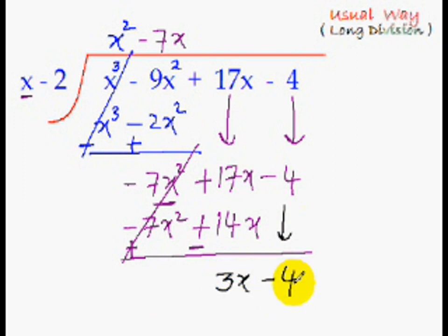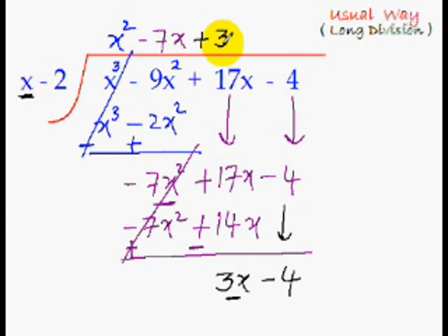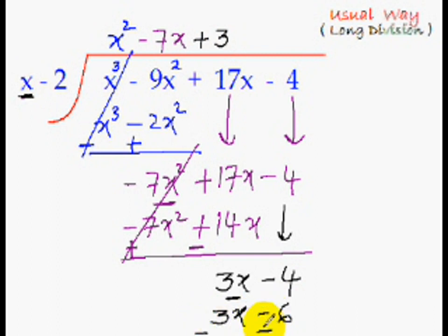This is our new dividend — repeat the process again. 3x divided by x is 3, so we put positive 3 at the top. Multiply: 3 times x is 3x, and 3 times minus 2 is minus 6. Subtract by changing signs: 3x becomes minus 3x, minus 6 becomes plus 6. These terms cancel, leaving minus 4 plus 6 which is plus 2. This is the remainder.